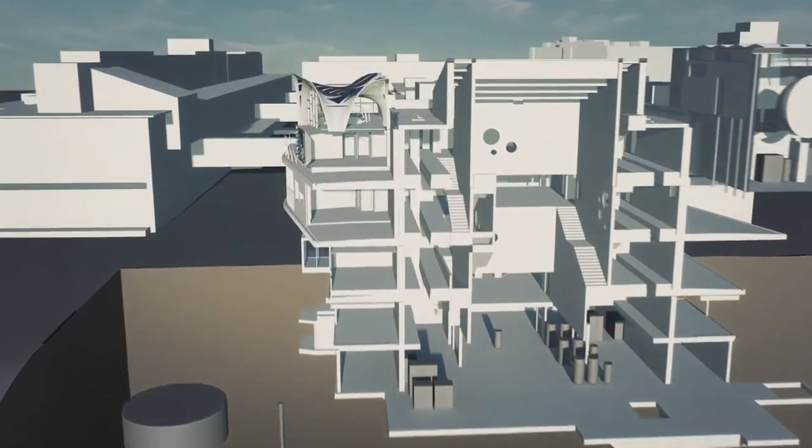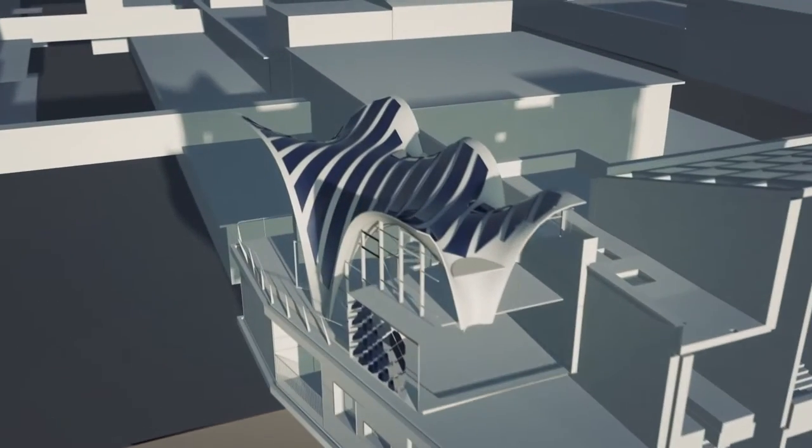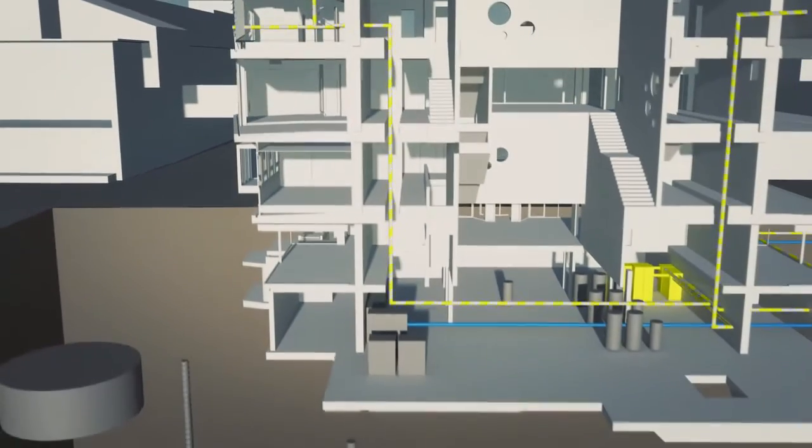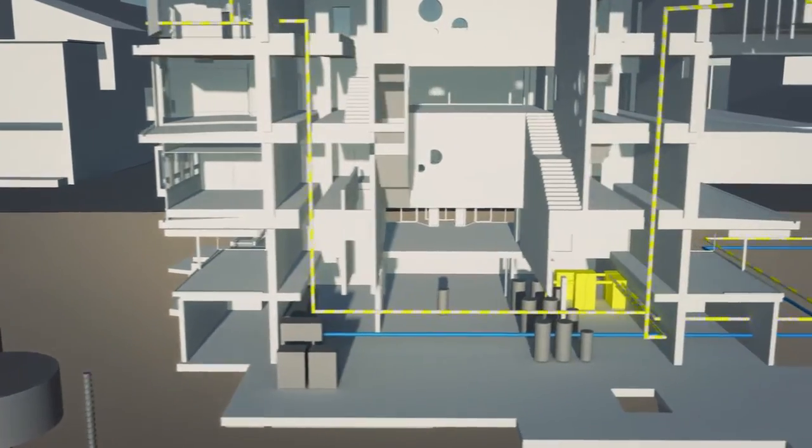Thanks to efficient photovoltaic systems, more electrical energy is produced in the summer than consumed locally. Batteries can store this energy in the short term.